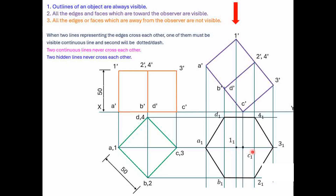As per Rule 1, edges 2 to 3 and 3 to 4 are already represented as dark. So the remaining edges 1 to 2 and 1 to 4 are also represented as dark. Edge A to 1 is also on the upper side and nearer to the observer, so it is completely visible and also represented with a dark continuous line.